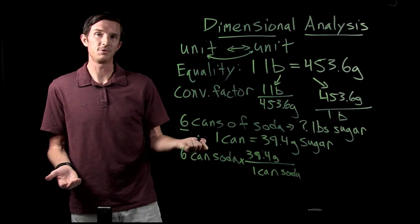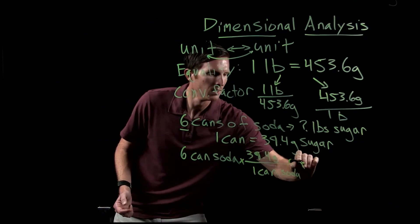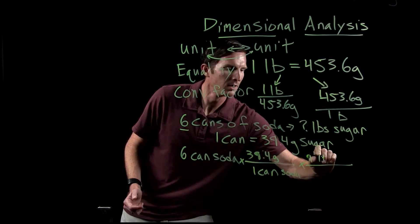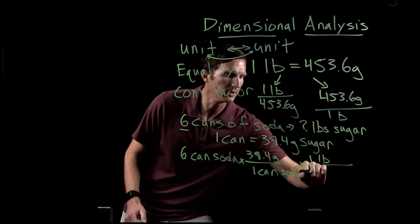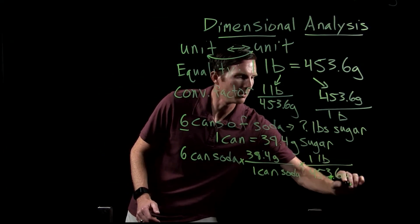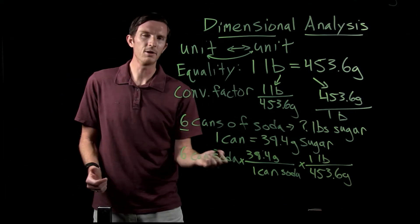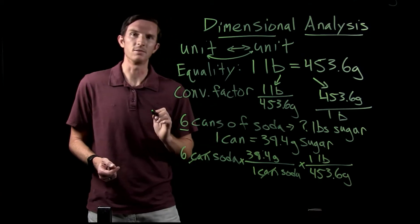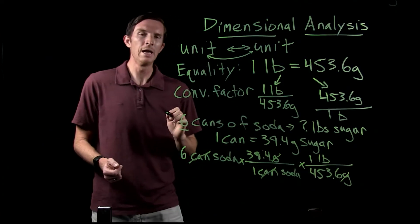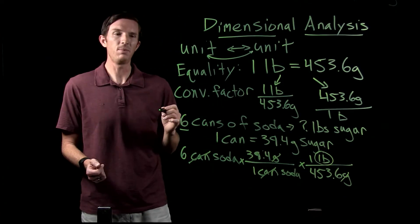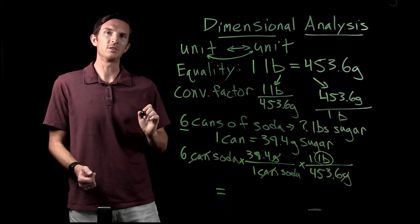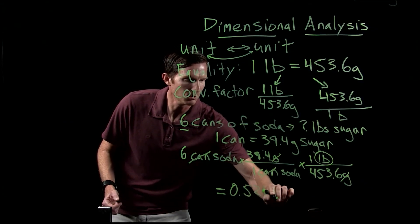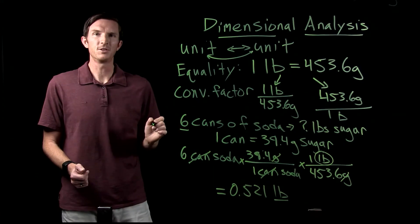If we stopped there, that would tell us how many grams of sugar are in six cans — but we want pounds. So we apply our other conversion factor: one pound over 453.6 grams. As we go through dimensional analysis, we want our units to cancel out. The cans of soda cancel, the grams cancel, and we're left with our desired unit of pounds. Plugging this into our calculator gives us 0.521 pounds of sugar.